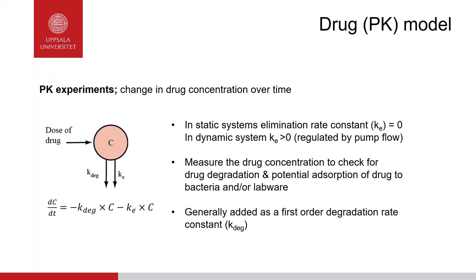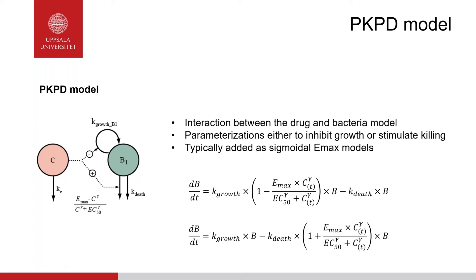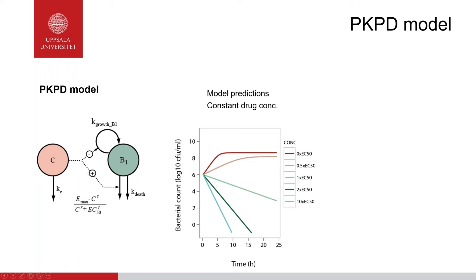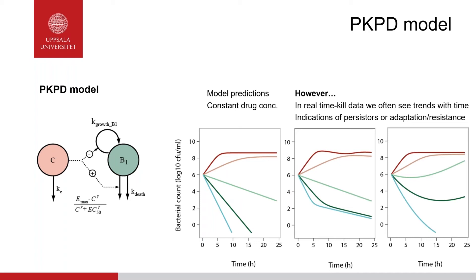This constitutes the simplest PKPD model to describe time-kill data. However, in real data we often see other trends: in the middle panel, persister cells not able to be killed by antibiotics produce a characteristic biphasic killing behavior; and in many time-kill curves, regrowth indicates resistance development. Due to these trends, PKPD models are often more complex. One example uses a persister-state model with a phenotypic switch between growing drug-sensitive bacteria and non-growing drug-insensitive bacteria to characterize the stationary phase, the inoculum effect, and the biphasic time-kill curve.